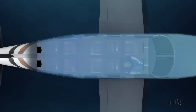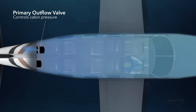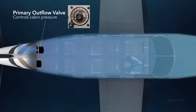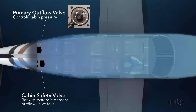Most systems incorporate two outflow valves located at the rear of the cabin to control the air leaving the pressure vessel. The primary outflow valve is set to maintain the maximum allowable pressure in the airplane, referred to as maximum differential. This valve is typically connected to a controller in the cockpit. The second valve is considered a safety valve and is set slightly above the maximum differential, acting as a relief valve should the primary outflow valve fail.